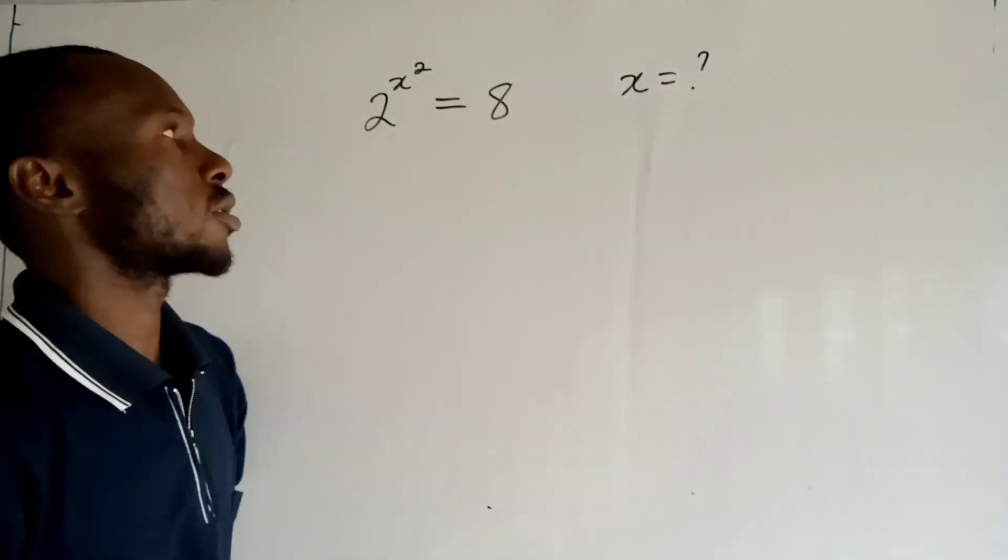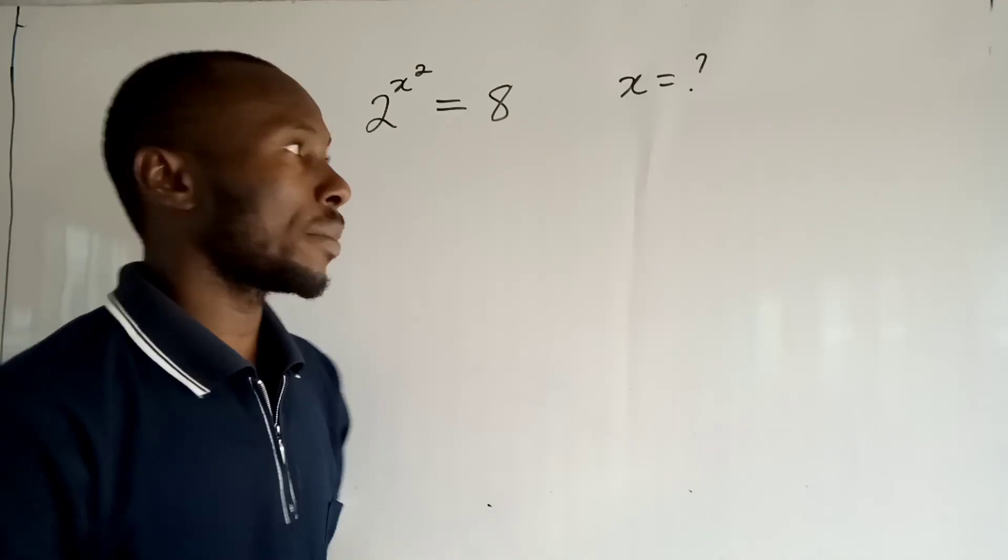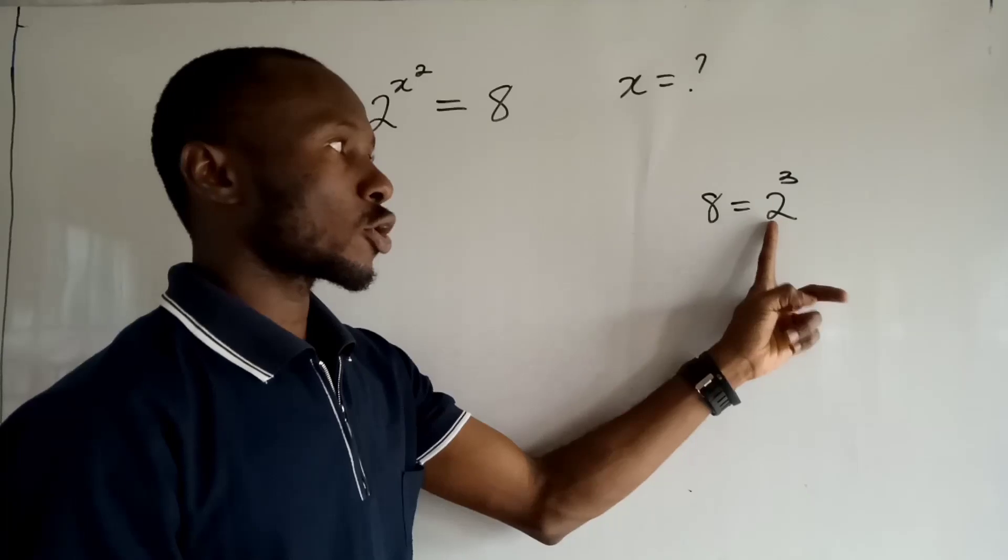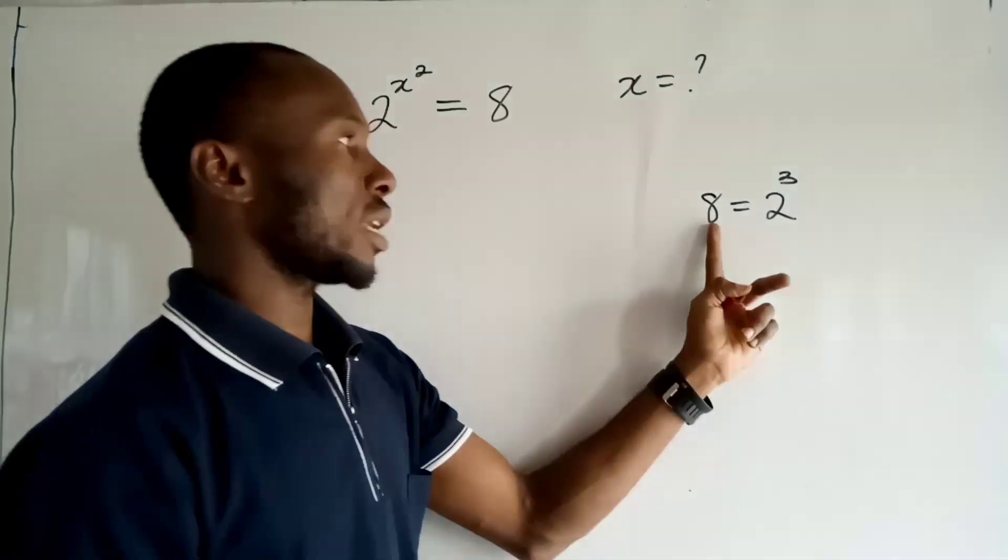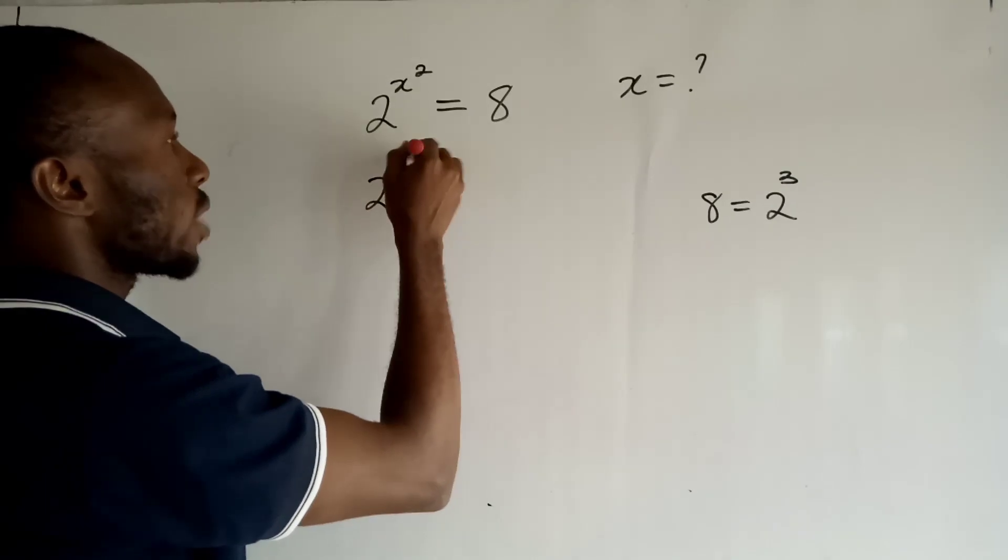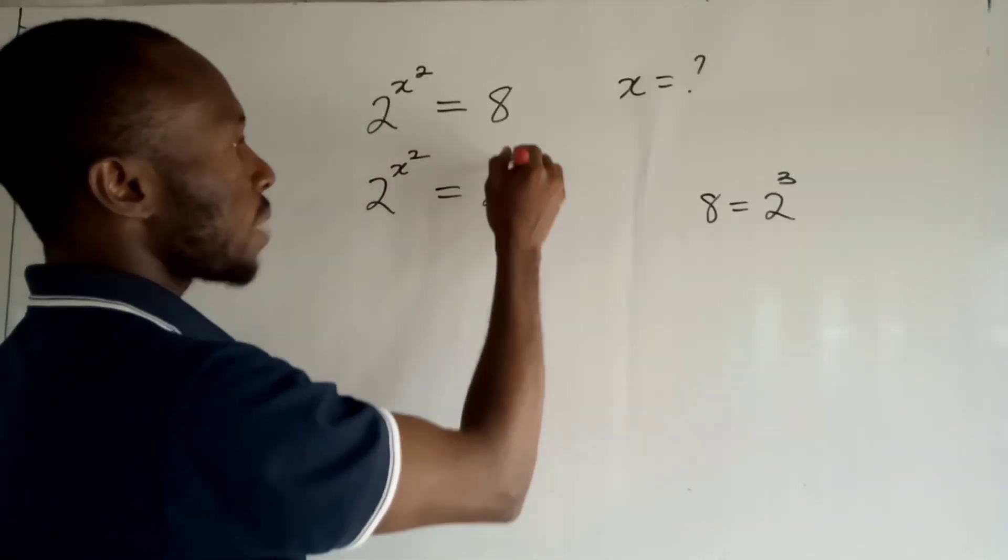So let us go back to the question. Now the first thing I want you to remember, 8 can be written as 2 to the power 3. Okay, that's 2 times 2 times 2 will give me 8. So I have this written as 2 to the power x squared is equal to 2 to the power 3.